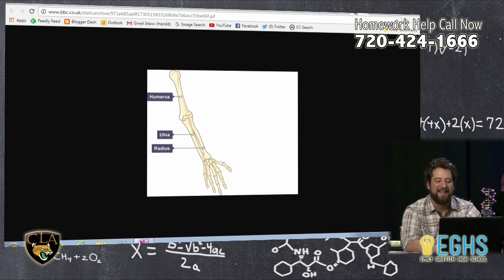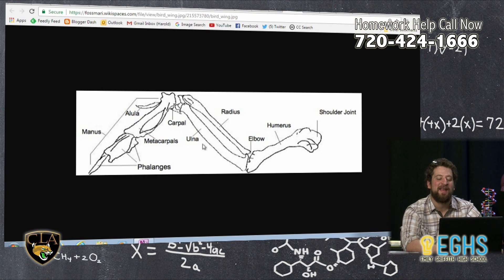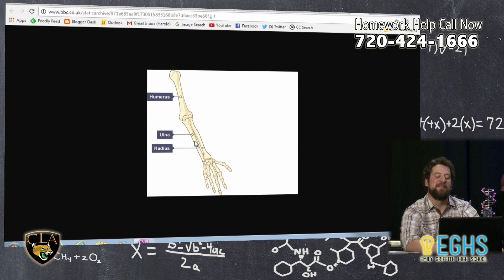There's the humerus in our human arm, so we can see that those are really similar. And then you've got the ulna and the radius, the lower arm in the bird, and you've got the ulna and the radius, the lower arm in the human.